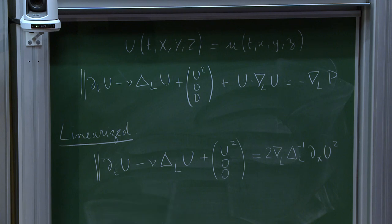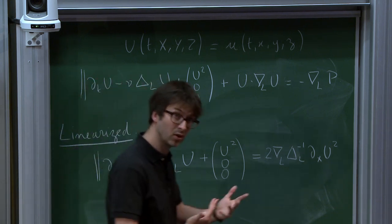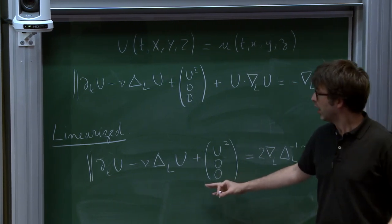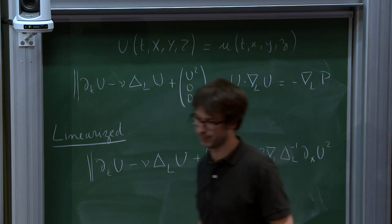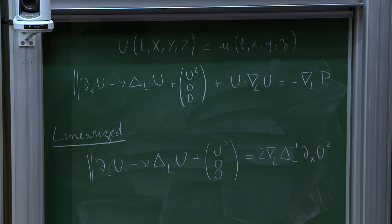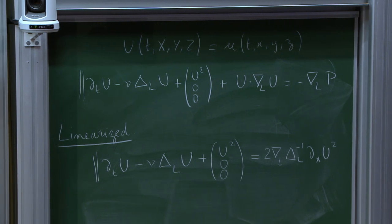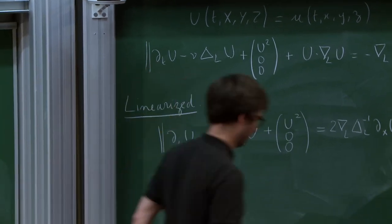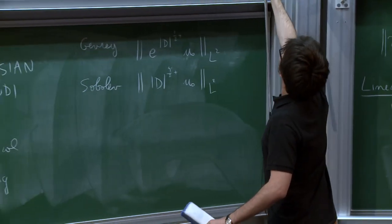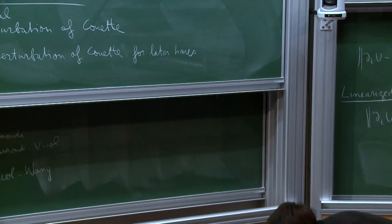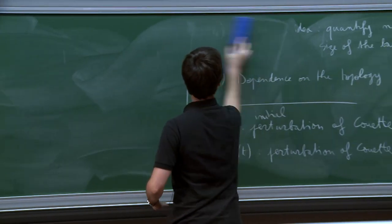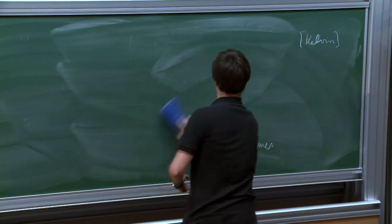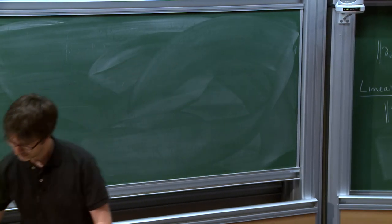Well, it's pretty clear. We get dt u minus nu Laplacian L u, and the pressure term, right? So you can express the pressure term as 2 grad L Laplacian L inverse dx u2. Okay, so that's the linearized problem, and that's the full nonlinear equation. So what I'm going to try and explain in the time that remains is a few striking properties of this linearized problem, which has a lot of very striking features, and then I'm going to mention a few important features of the nonlinear problem.